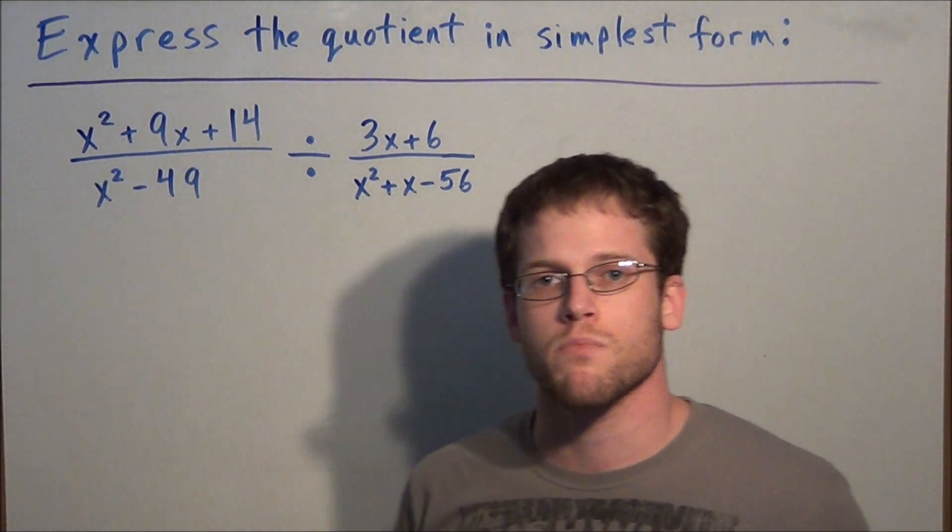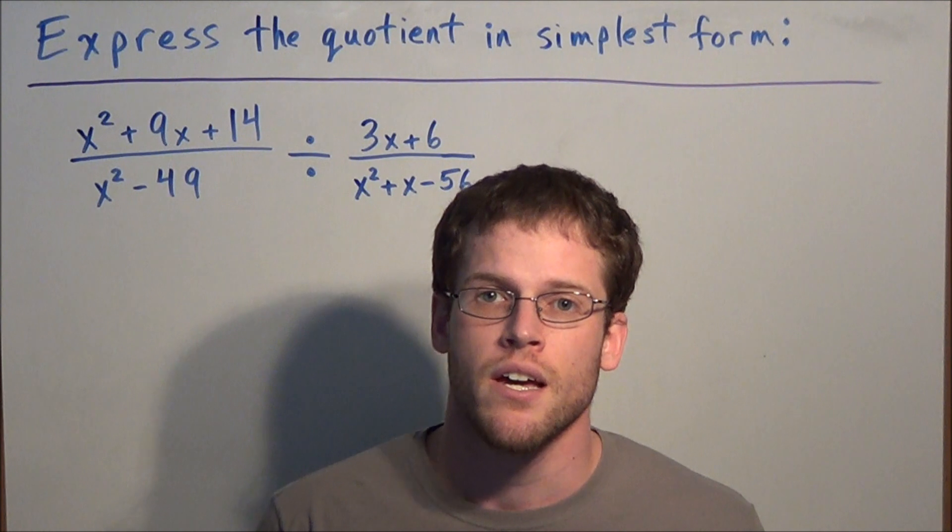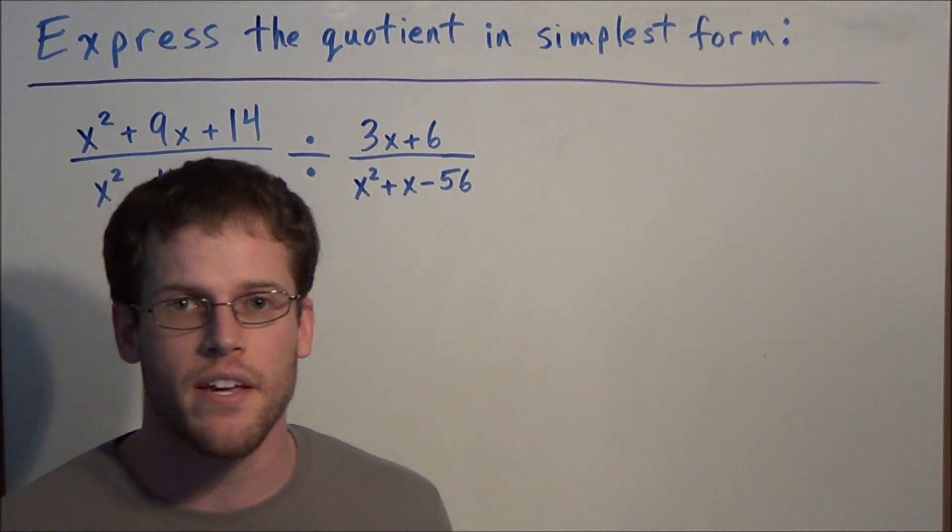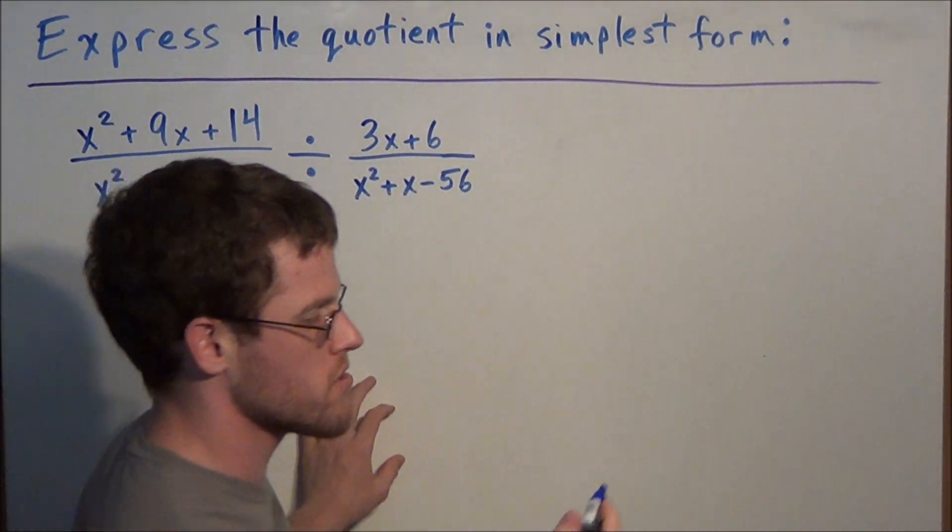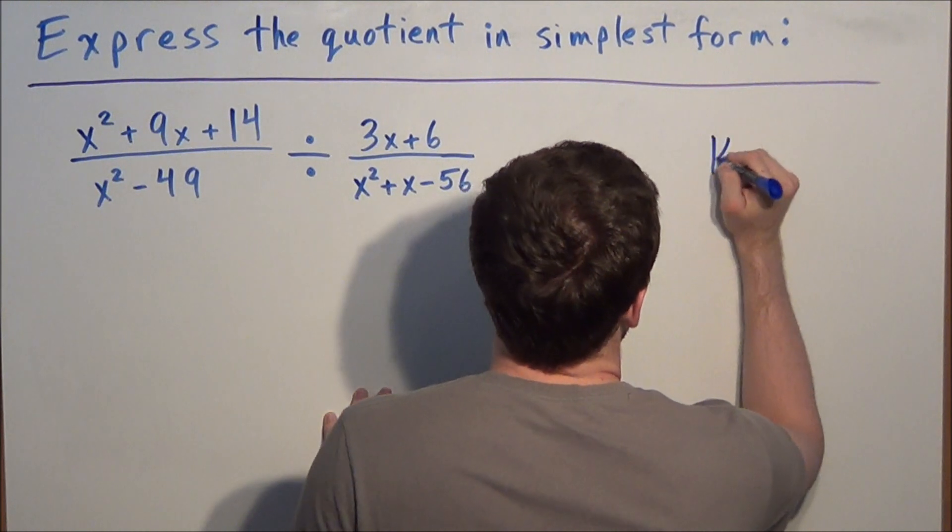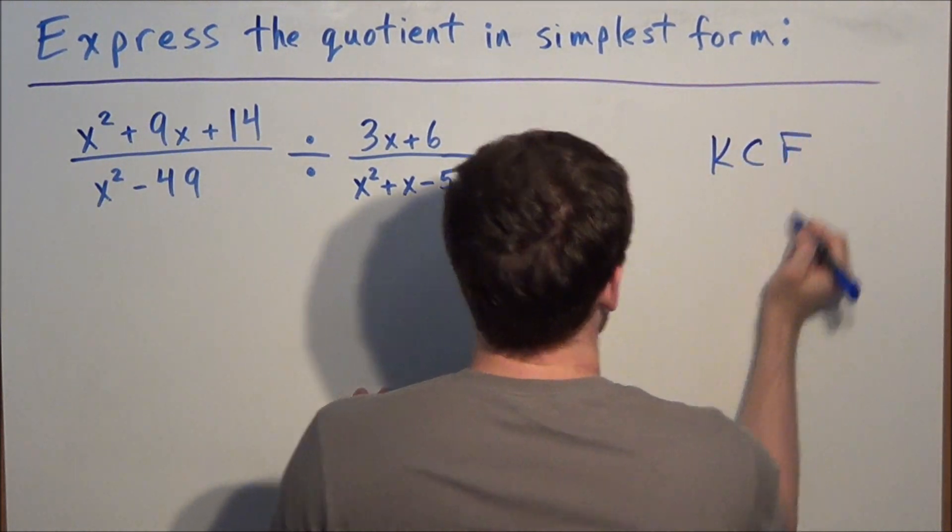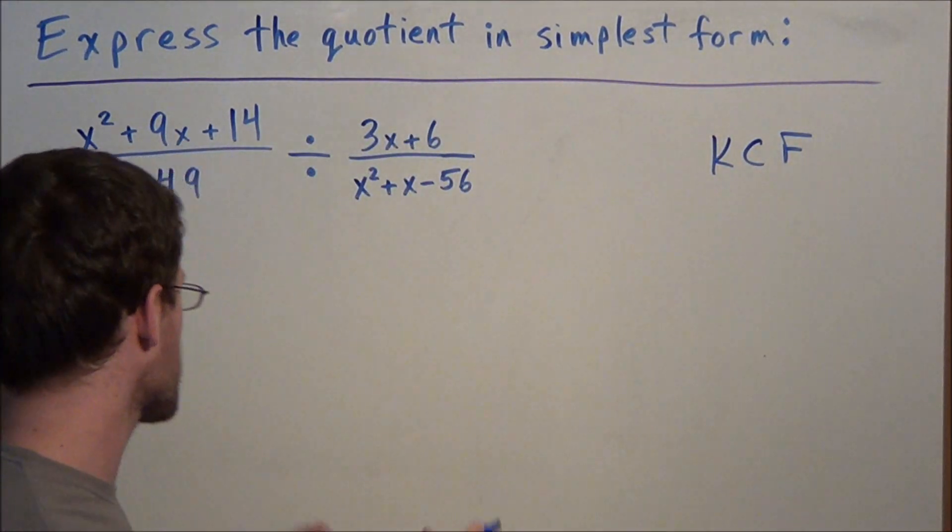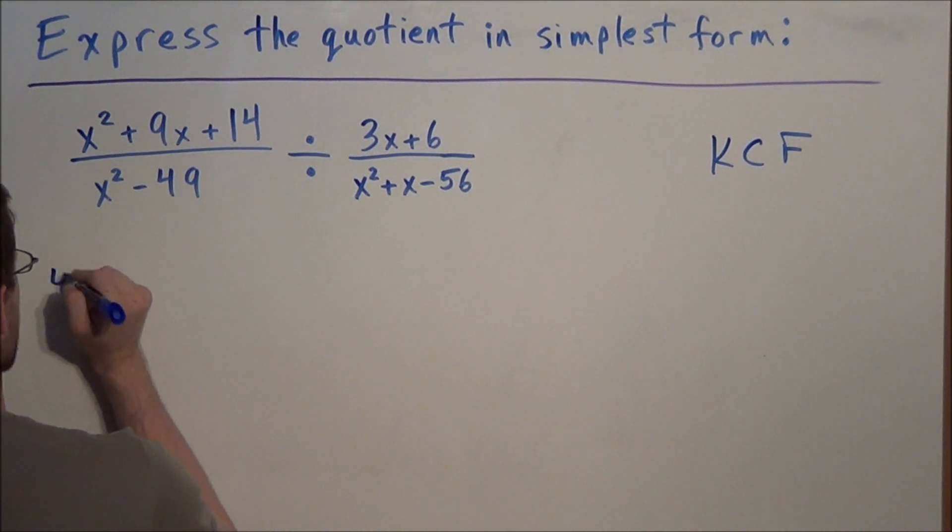Now with dividing rational expressions it's a lot like multiplying except there's one extra step in the beginning. You have to re-familiarize yourself with that concept of keep change flip. So the first thing you should do with this problem is turn it into a multiplication example.